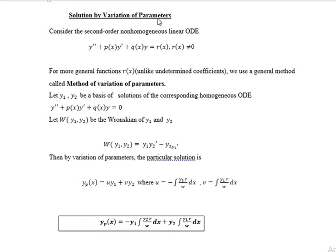Solution by variation of parameters. This is known as a general method. Consider the second order non-homogeneous linear ODE: y'' + p(x)y' + q(x)y = r(x), where r(x) ≠ 0. For more general functions r(x), we use this method, which is known as the method of variation of parameters.